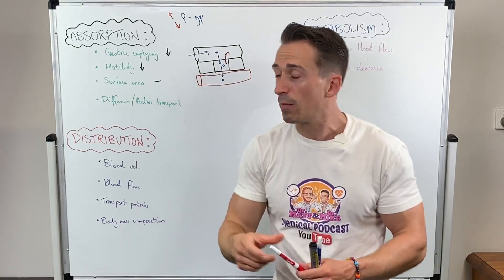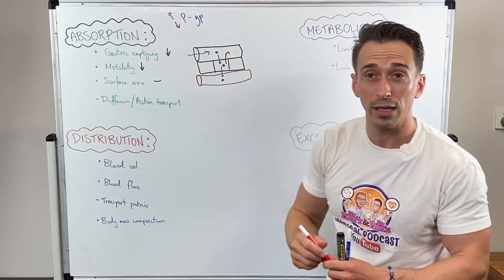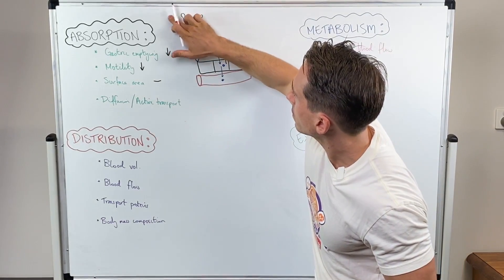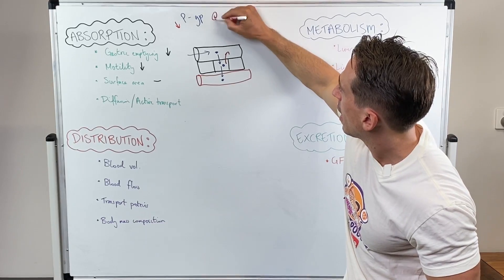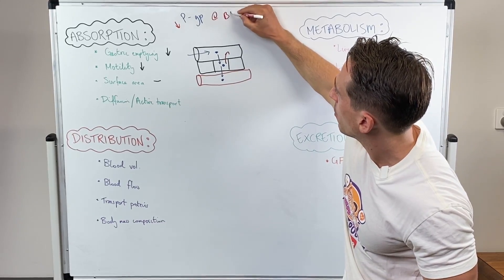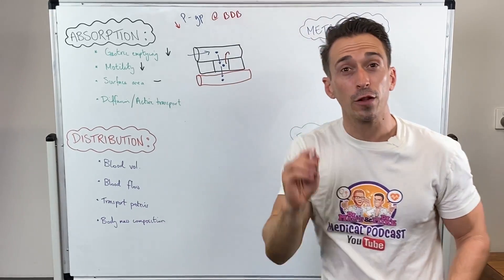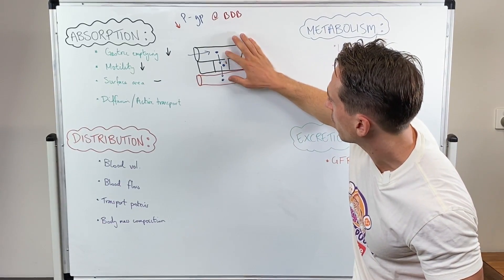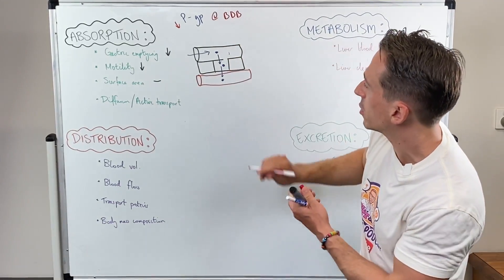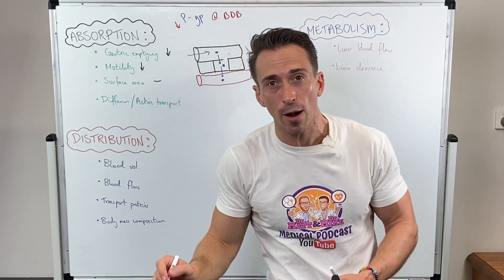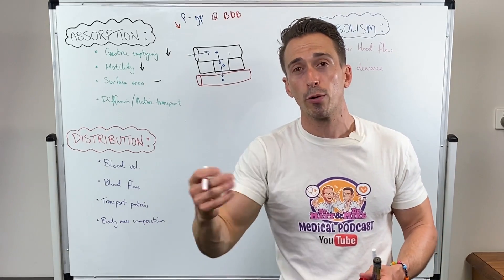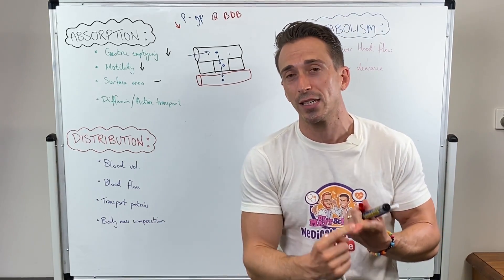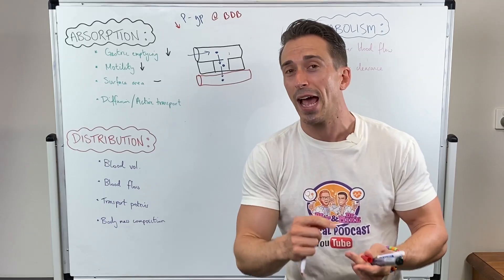A final point regarding PGP is that its expression is reduced at the blood-brain barrier for the older person. If it's reduced, it's less likely to throw the drug back, so the drug is more likely to cross the blood-brain barrier. This may be one reason why older people are more sensitive to centrally acting compounds and toxins.